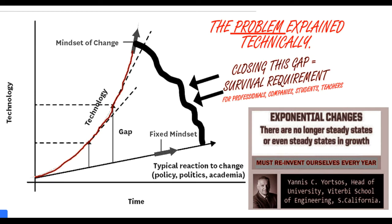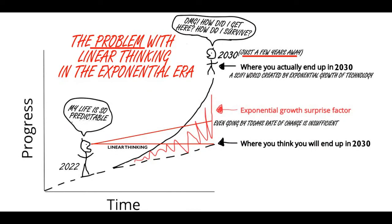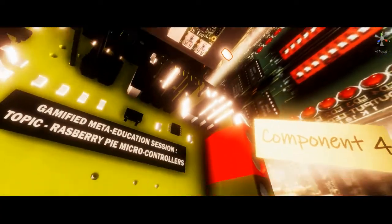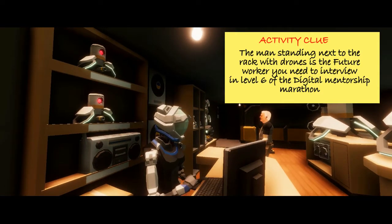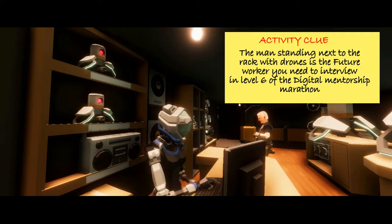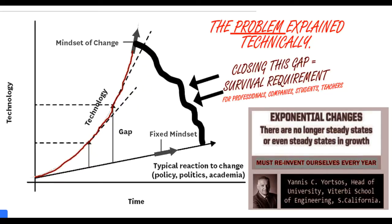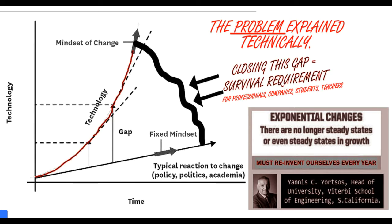The issue is that if we keep thinking linear, we end up in the same scenario as the person shown in the 2013 chart — unprepared for sci-fi worlds in the era of Industry 4.0 and 5.0. Closing that gap is actually a survival requirement for all human beings and businesses. The challenge is that we need to reinvent ourselves every year to keep the gap closed. Professor Yanis Siyotsos, head of a university with the Viterbi School of Engineering at Southern California, says: there are no longer steady states. Changes will be exponential. We need to reinvent ourselves every year.